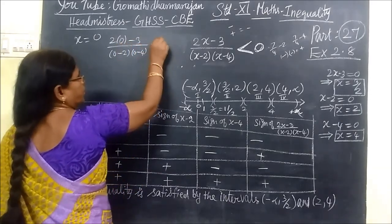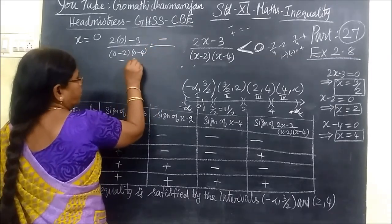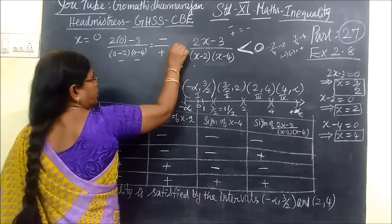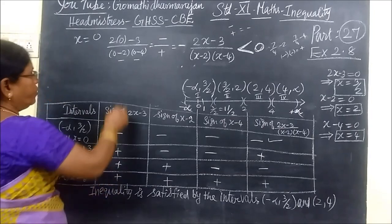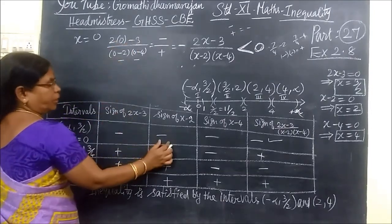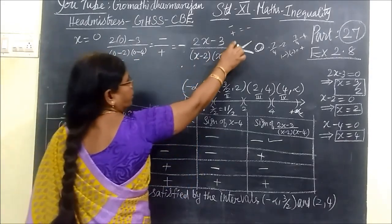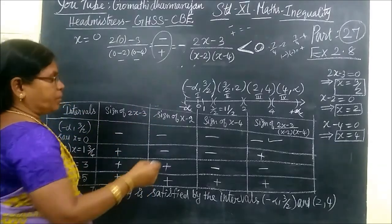When you substitute x equal to 0, here 2 bracket 0 minus 3, 0 minus 2, then 0 minus 4. This is negative value, then here is negative, here is negative. So minus minus minus plus. Finally, you are getting negative value.